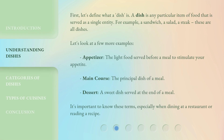First, let's define what a dish is. A dish is any particular item of food that is served as a single entity. For example, a sandwich, a salad, a steak — these are all dishes.